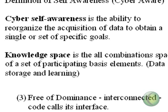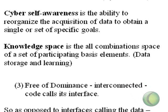We say cyber awareness is the ability to reorganize the acquisition of data and also the code that would acquire that data to obtain a single or set of specific goals. In that, we're going to use a one-two punch of cyber awareness and knowledge space. Knowledge space is the all-combination space of a set of participating basis elements — it's used for data storage and learning. If you take all the human cells and do it the way it's typically done in artificial intelligence and neural networking, you cannot create enough weights to contain the human knowledge, the human expanse, the ability of the brain. There's got to be another way, and one way is knowledge space. We take all possible combinations — virtually every possible piece of knowledge just by combining a set of basis functions — and you search that space. If that's the way the human brain works, it contains a vast, infinite amount of knowledge, or at least knowledge based on a certain resolution.